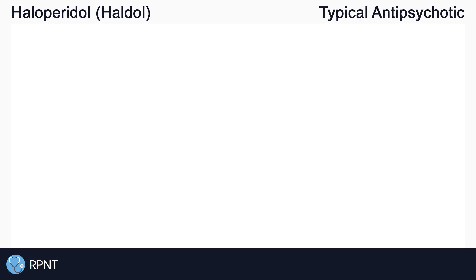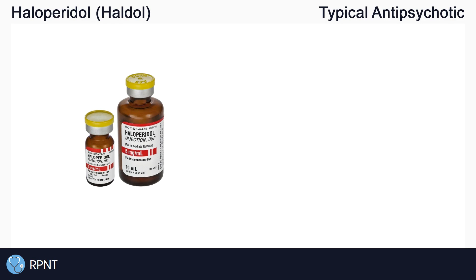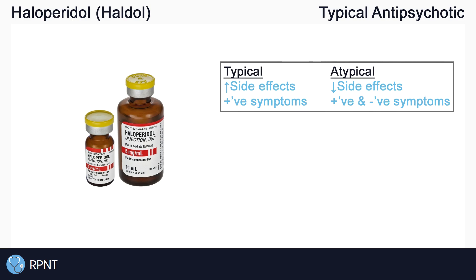Hi everyone, this is Ryan from rpnt.ca and today we're going to be talking about the drug haloperidol, also known as Haldol. Haloperidol belongs to the drug classification called typical antipsychotics. Before we talk about haloperidol specifically, we'll cover a bit of information about two of the general antipsychotic classes: the typical and atypical antipsychotics.